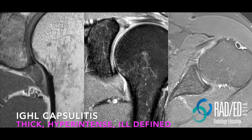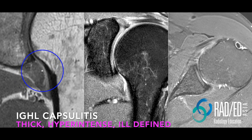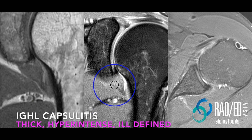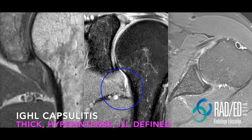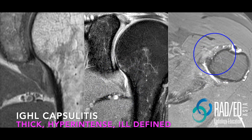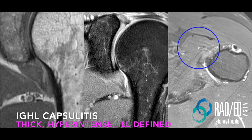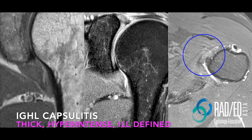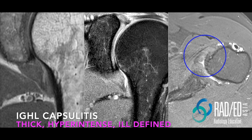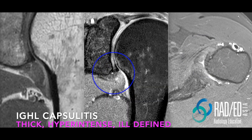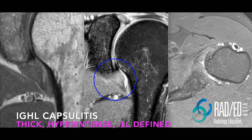What does it look like when you get capsulitis? The IGHL becomes thickened and hyperintense — it has lost the black signal. On the PD fat sat it's hyperintense and thickened. The signal intensity gets close to muscle, which is why there isn't much contrast between the two. For IGHL capsulitis, look for thickening, hyperintensity, and ill-definition of the IGHL.